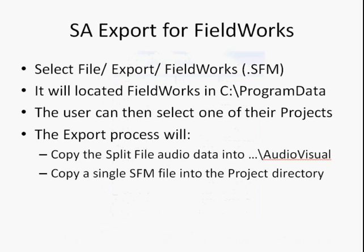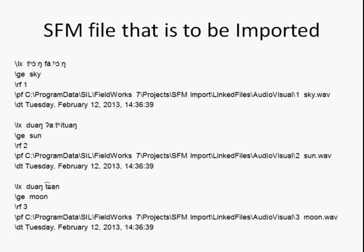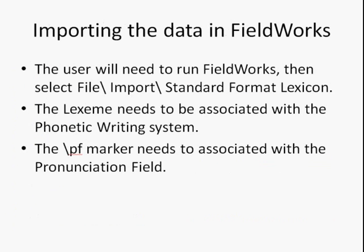For exporting to FieldWorks, select the FieldWorks-specific export. It will locate the program data directory and allow the user to select the project of their choice. The export process will split the data and put it in the audiovisual directory of that project, and also copy the SFM file into the project directory. The SFM file has the lexeme, the gloss, reference number, and the pronunciation file, which is the audio file. Then inside FieldWorks, that file needs to be imported. The standard format file should be imported; the lexeme needs to be associated with the phonetic writing system, and the pronunciation file marker PF needs to be associated.